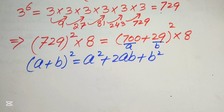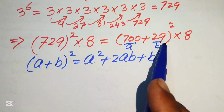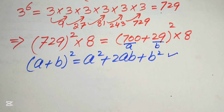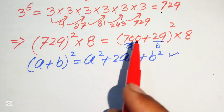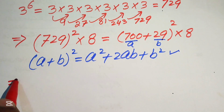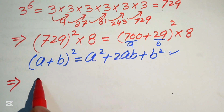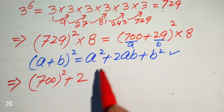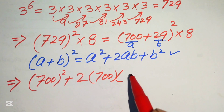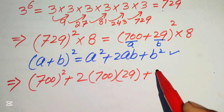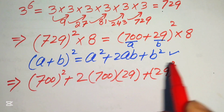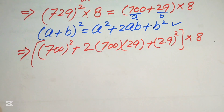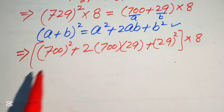We expand (700 + 29)² using this formula, writing it as 700 squared, plus 2 times 700 times 29, plus 29 squared, all multiplied by 8. Now we need to compute each term.